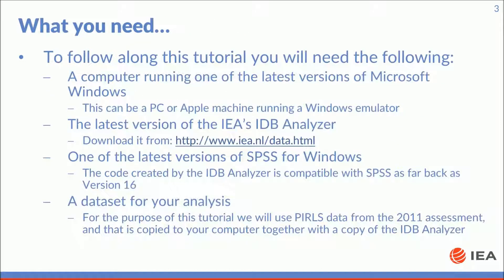To follow along with this tutorial you will need the following: a computer running one of the latest versions of Microsoft Windows — this can be a PC or Apple machine running a Windows emulator — the latest version of the IDB Analyzer which can be downloaded from the IEA website, one of the latest versions of SPSS for Windows, and a data set for your analysis. For the purpose of this tutorial we will use PIRLS data from the 2011 assessment, which was copied to your computer together with your copy of the IDB Analyzer.